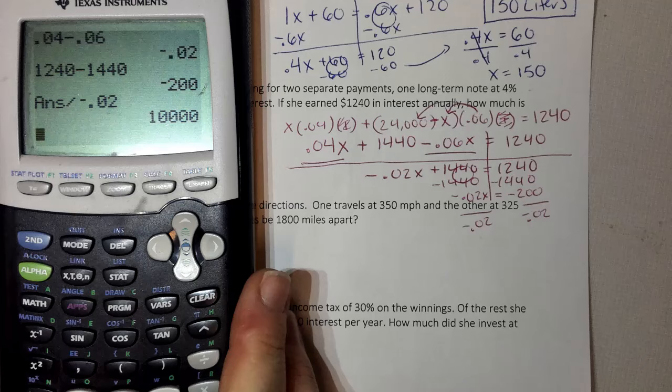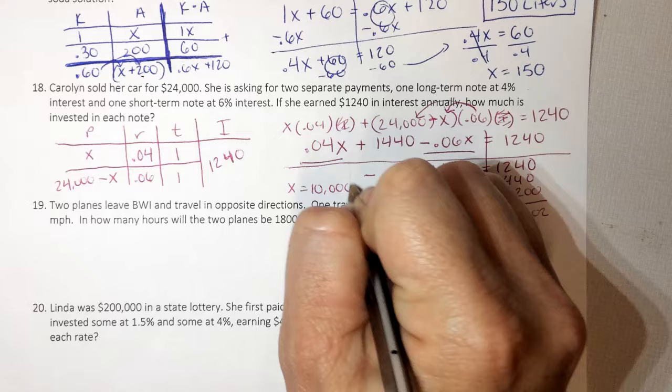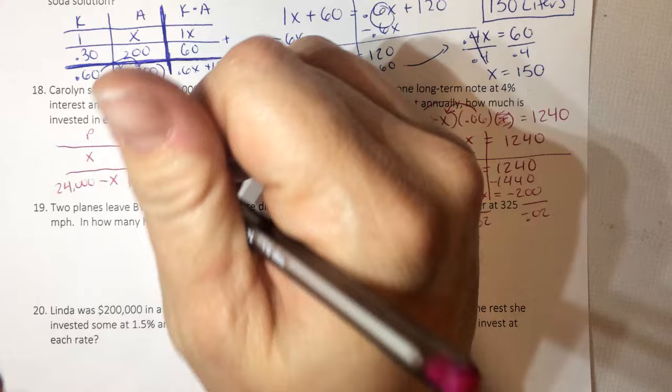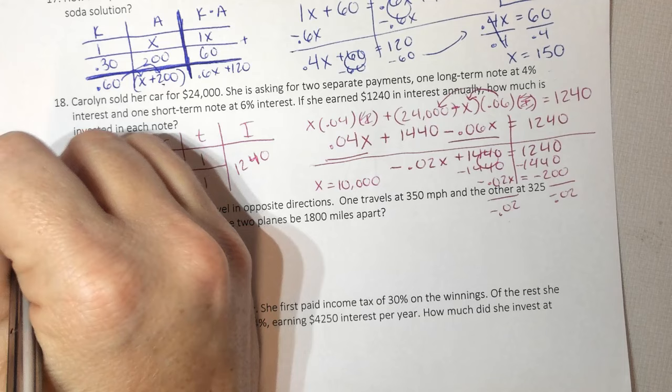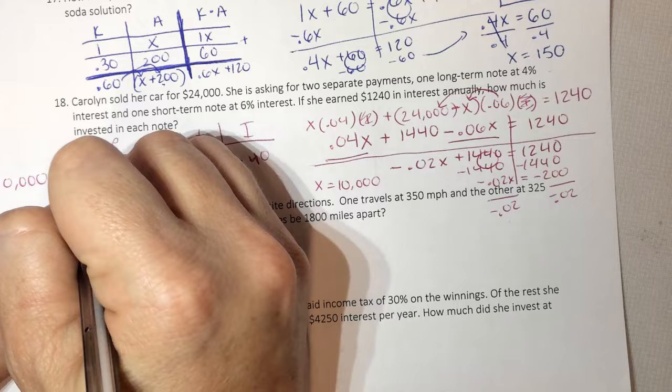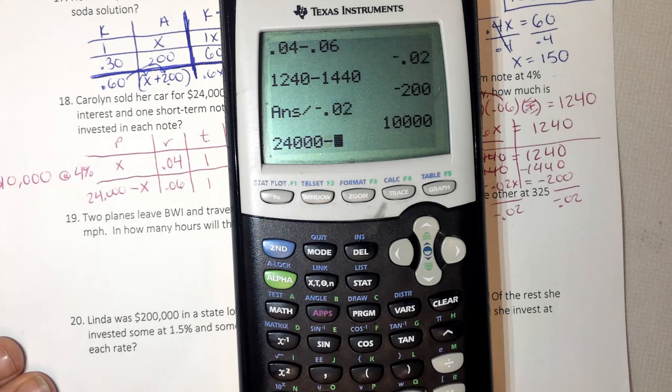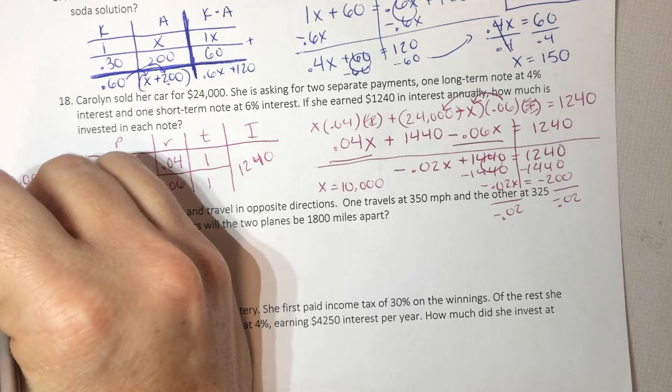So X equals 10,000. But I'm not done. I have to go back and read my question. How much is invested in each note, so the 4% and the 6%? Well, X is 10,000. Dollars, do not forget to label, at 4%. And then 24,000 minus X, so 24,000 minus 10,000, gives me 14,000 at 6%.